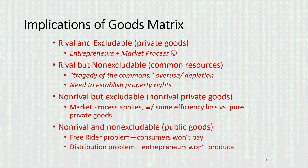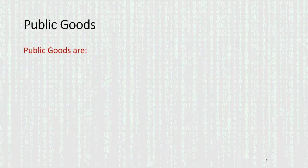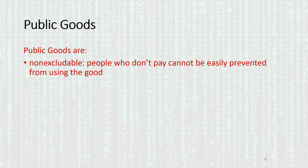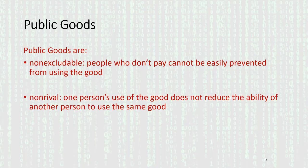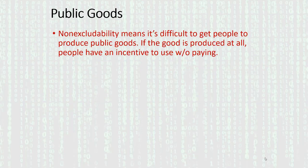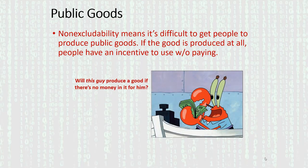Let me go into this a bit more. Public goods are non-excludable, so people who don't pay can't easily be prevented from using the good. They're also non-rival, meaning one person's use doesn't reduce anyone else's ability to use the same good at the same time. So non-excludability means it's difficult to get people to produce public goods — if the good is produced at all, people have an incentive to use it without paying.